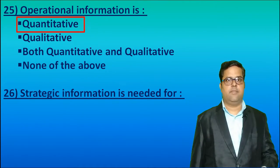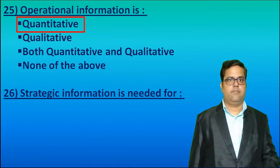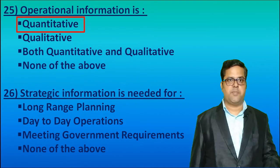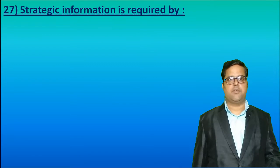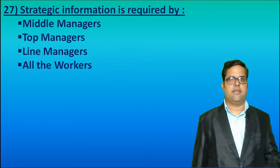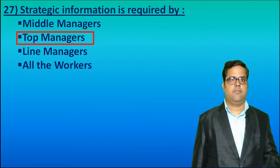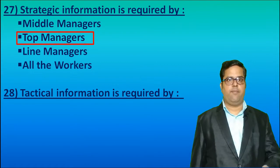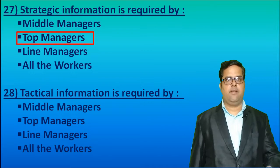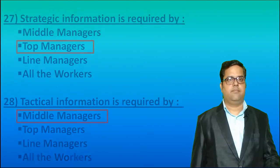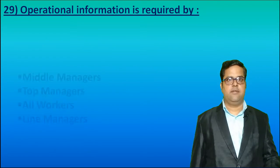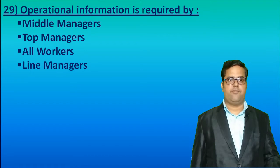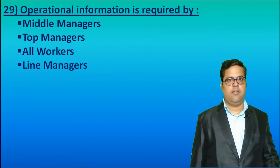Twenty-sixth, Strategic Information is needed for — as already discussed, it is required by Top Level Management for doing Long Range Planning, so the answer will be Long Range Planning. Twenty-seventh, Strategic Information is used by Top Level Managers. Twenty-eighth, Tactical Information is required by Middle Level Managers. Twenty-ninth, Operational Information is required by Lower Level Management, that is Line Managers. So, the answer will be Line Managers.